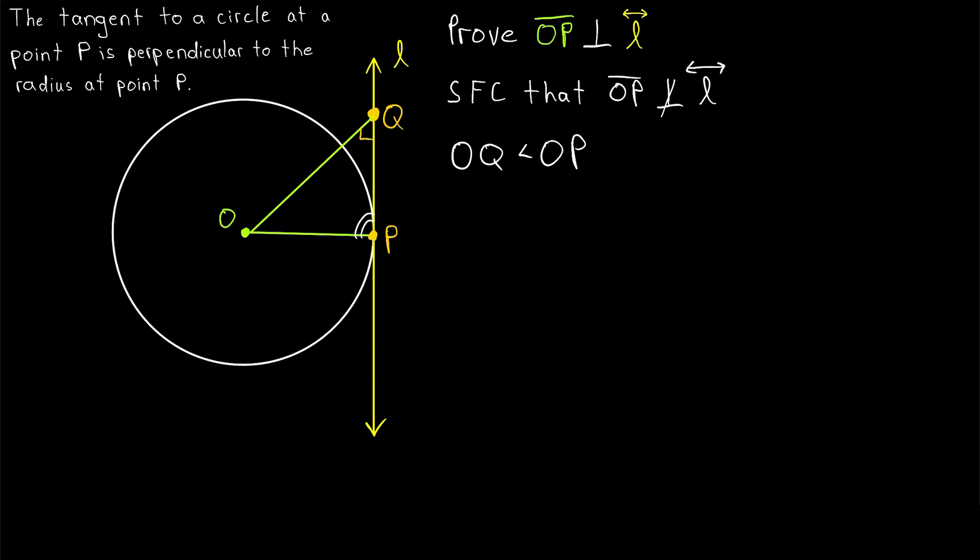Now, why is it that, to us, OQ looks certainly longer than OP in the first place? Well, OP is a radius of the circle, and OQ is made up of a radius of the circle and then some. So, perhaps we can use that to get our contradiction.